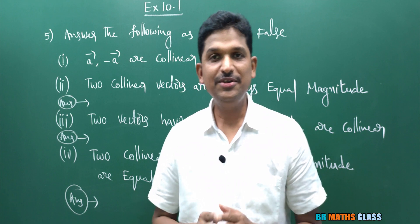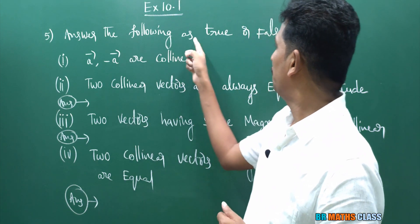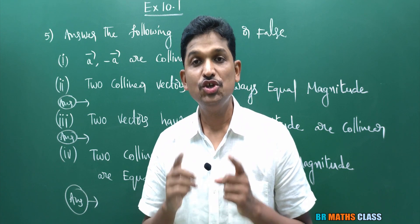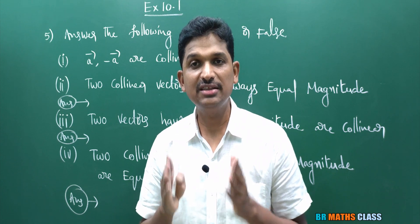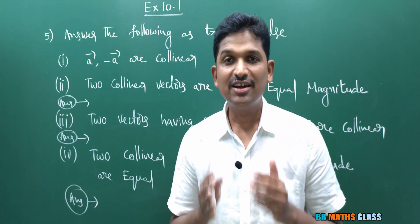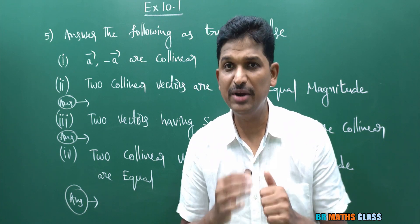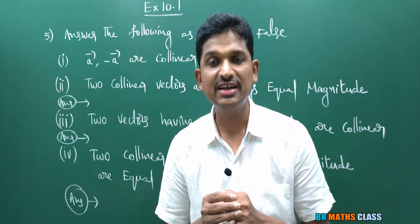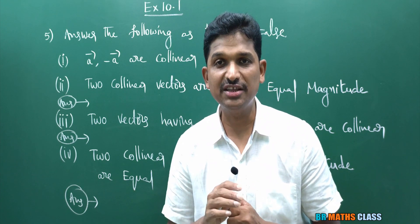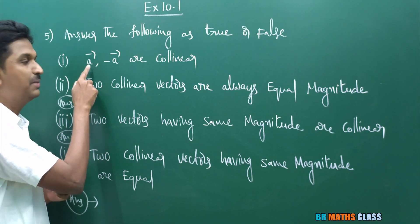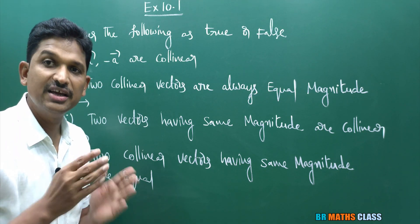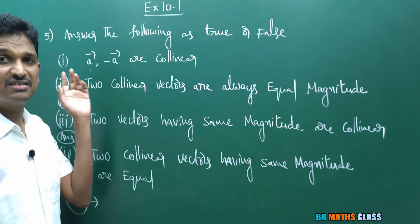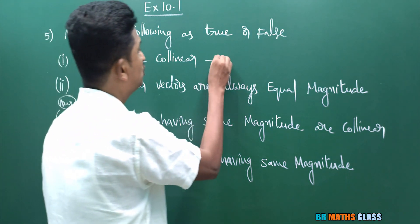Question 5: Answer the following as true or false. To understand this, you must know the definition of collinear vectors. If two vectors a̅ and b̅ are collinear, one vector can be expressed as a scalar multiplication of the other. For this vector, if you multiply by minus one, you get the opposite vector. So a̅ and −a̅ are collinear vectors, and this statement is true.